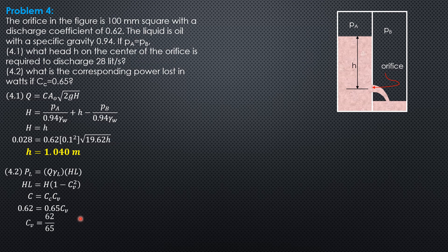Substituting into the formula for power loss: 0.028 times 0.94 times 9,810 N per cubic meter, then head loss is 1.04 times quantity 1 minus Cv squared. Computing the power loss in watts, it equals 24.22 watts.